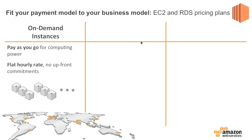With on-demand, you pay as you go for computing power. You don't have to pay anything upfront. You're renting it by the hour and it's a flat rate. You can turn everything off, and less than 59 minutes later your bill goes to zero and you can walk away. That's where everybody should start — on-demand provides pure flexibility and dependability.